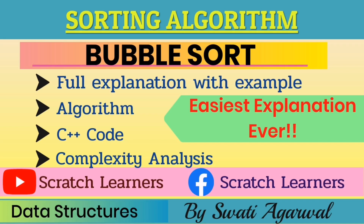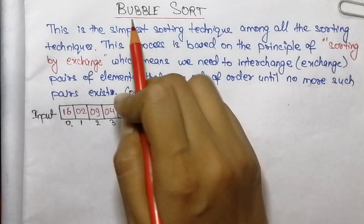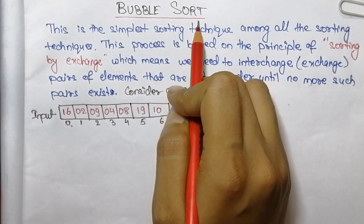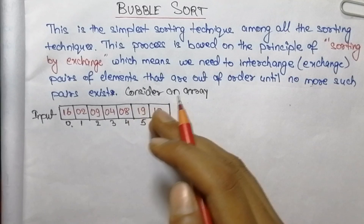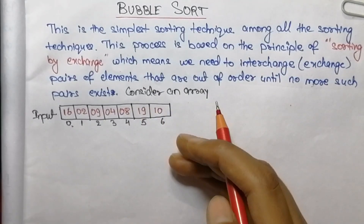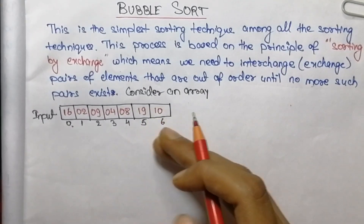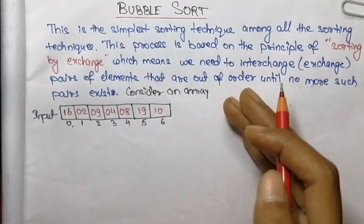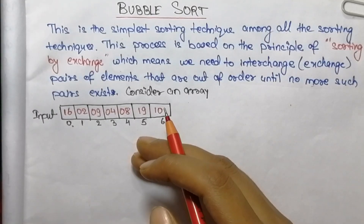Hello everyone, welcome back to our YouTube channel Scratch Learners. Today we are going to discuss about bubble sort. What is sorting? Sorting an array refers to arranging the elements of the array in some logical order. The logical order can be increasing or decreasing order of elements.